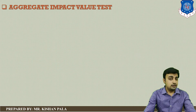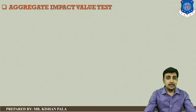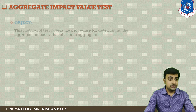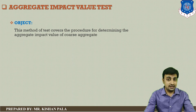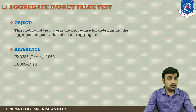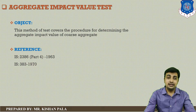Let us start with the Aggregate Impact Value Test. This method covers the procedure for determining the aggregate impact value of coarse aggregates. You can refer to Indian Standard 2386 Part 4 1963 and Indian Standard 383 1970.